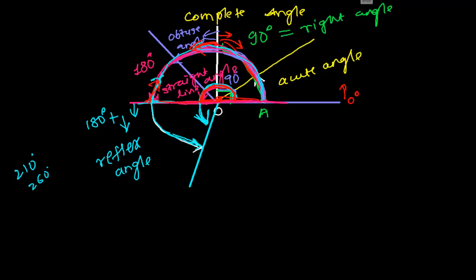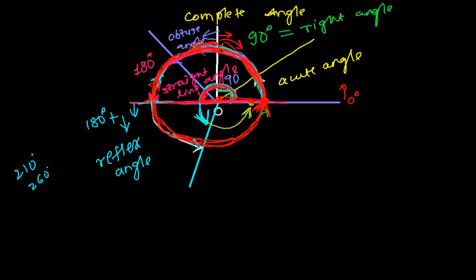Now, what happens if I move more and more and come back to the same original point? I started from point A, and I completed all angles — acute, right angle, obtuse angle, straight line angle, reflex angle — and I return to my original position. I have covered a circular path, like a circle. It looks like a cycle: I started from point A, completed one complete rotation, and turned back to the same point A.